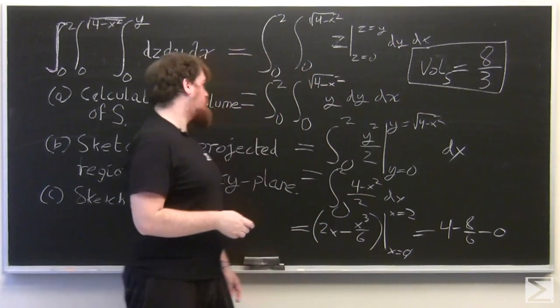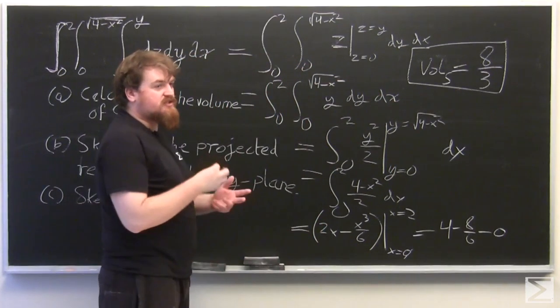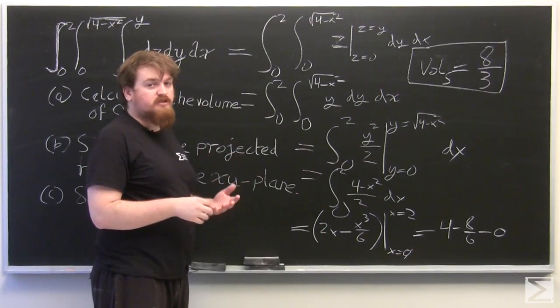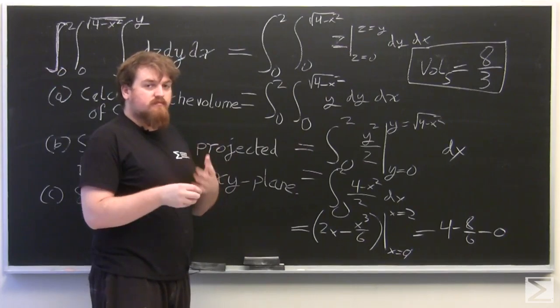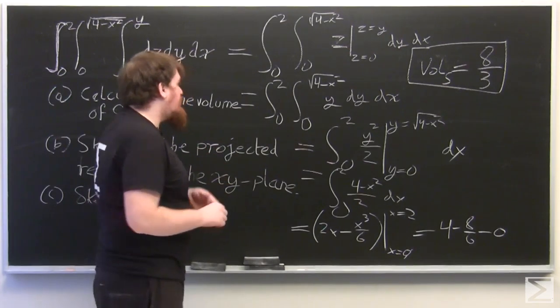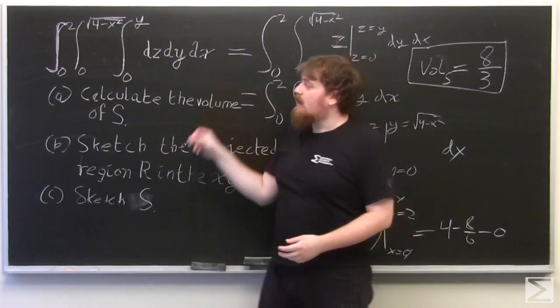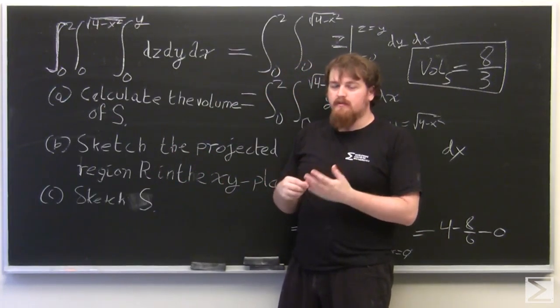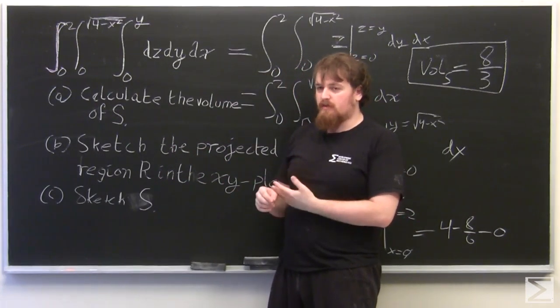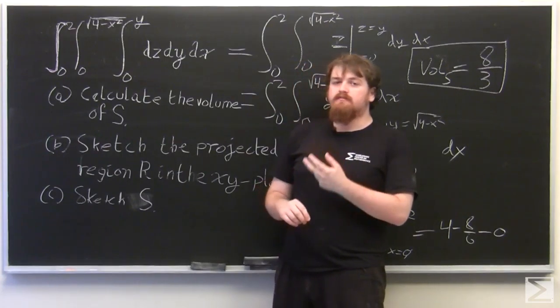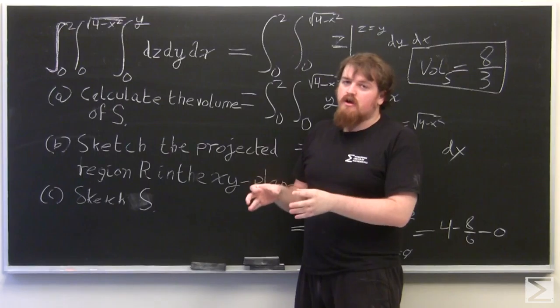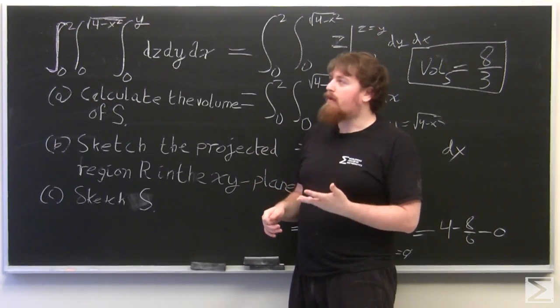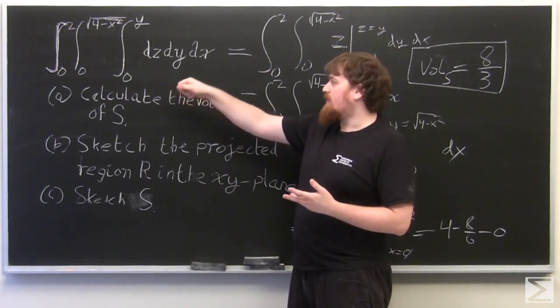And no, it's not in meters. So now we want to sketch the projected region R, which is a projection of S onto the xy plane, and then to sketch S itself. So because x and y are the outermost two variables that are integrated, the projection onto the xy plane will just be given by the limits of integration of x and y.